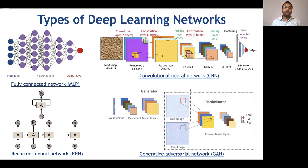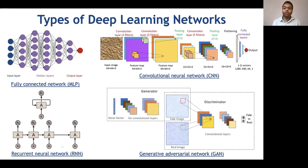Deep learning comes in different flavors for different tasks. You can have a fully connected network, which is typically used for numerical or vector inputs. You can have convolutional neural networks, which are used for image data and provide a nice property of spatial invariance, avoiding an explosion in the number of network parameters. If you have sequential data, like time series, language modeling, or translation, then you can use recurrent neural networks.